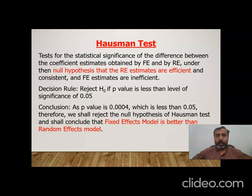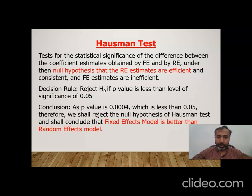To summarize: we discussed three panel data models — common effect, fixed effect, and random effect. The redundant fixed effect likelihood test decides between common effect and fixed effect models: if the p-value is less than 0.05, fixed effect is better. The Hausman test decides between fixed and random effect models: if the p-value is less than 0.05, fixed effect is better. In our example, after running all tests, we conclude that the fixed effect model is better than both the common effect and random effect models.